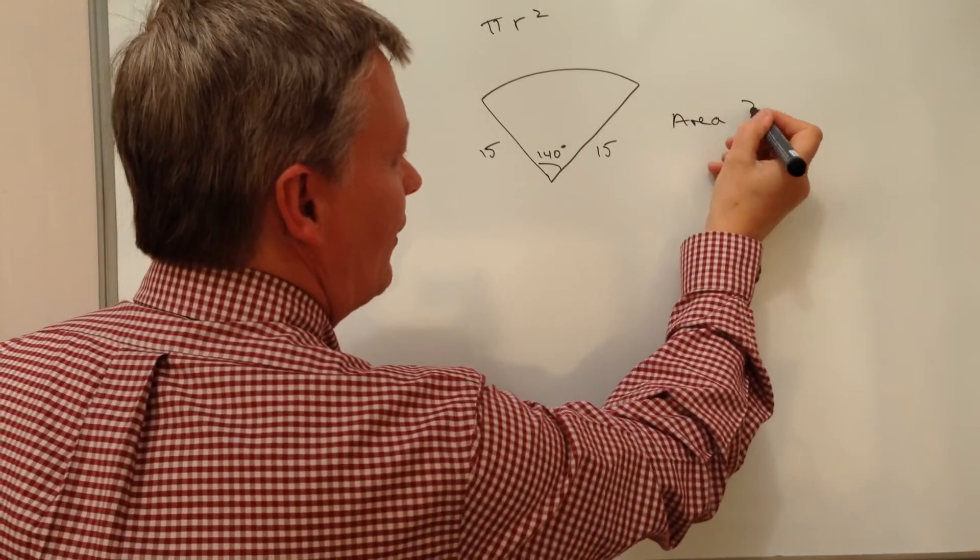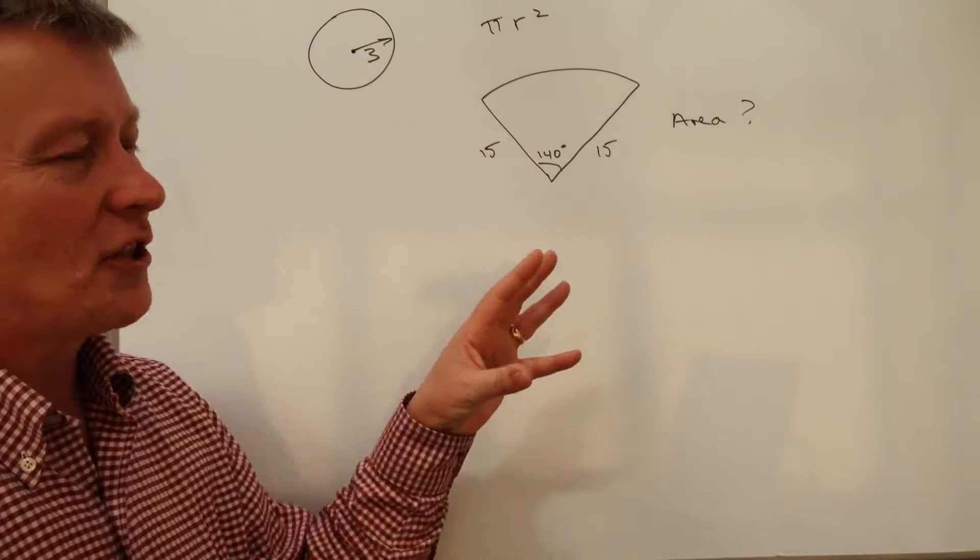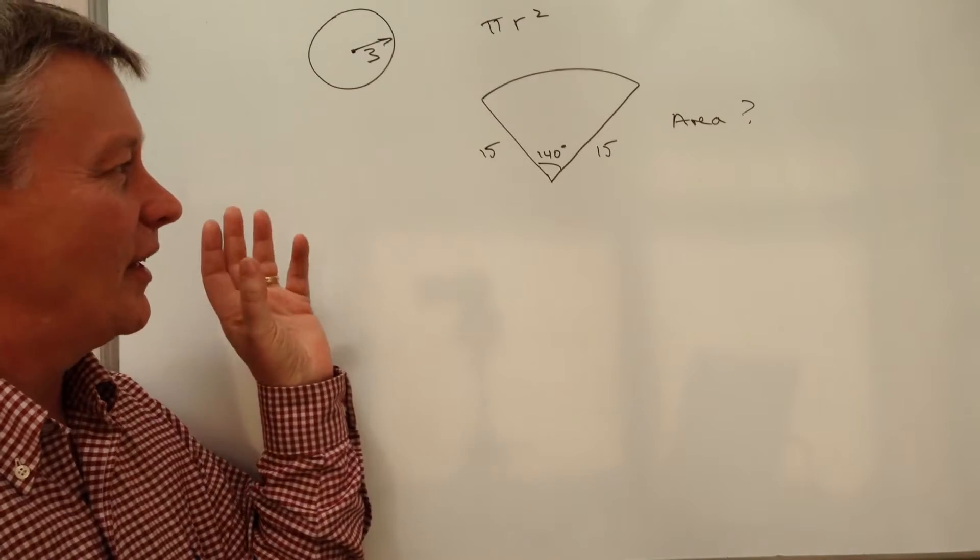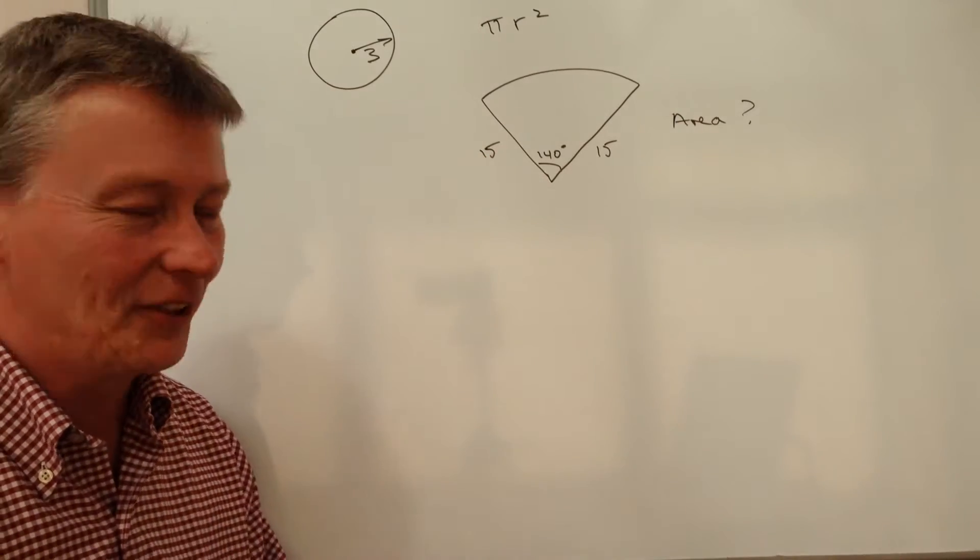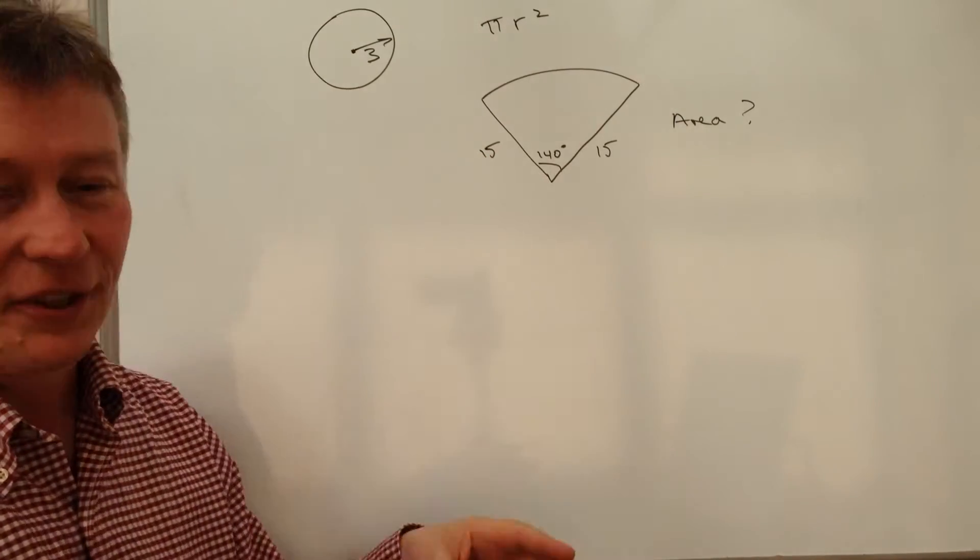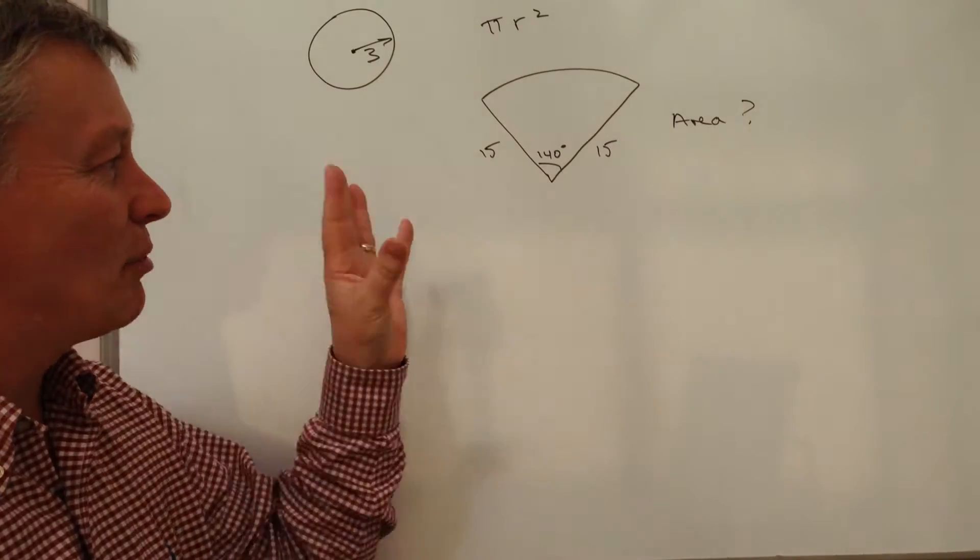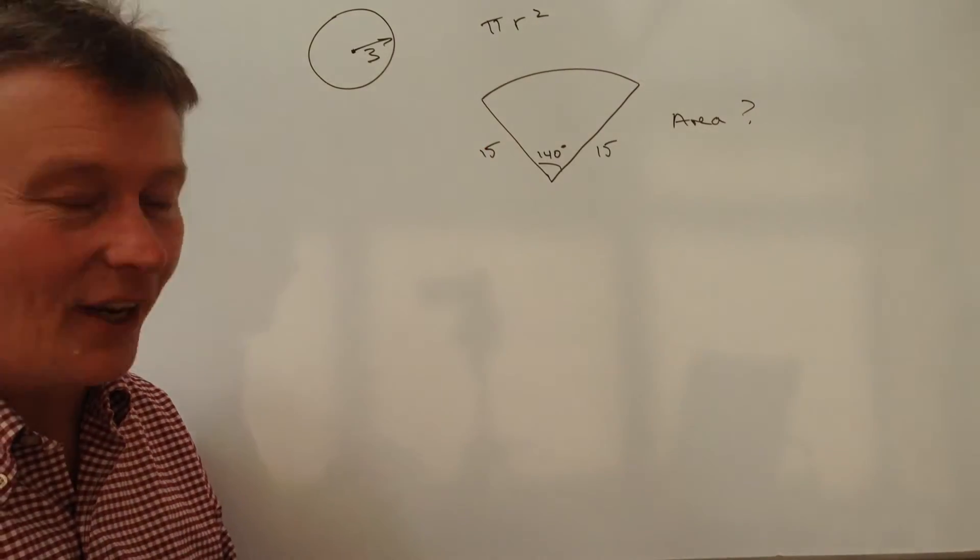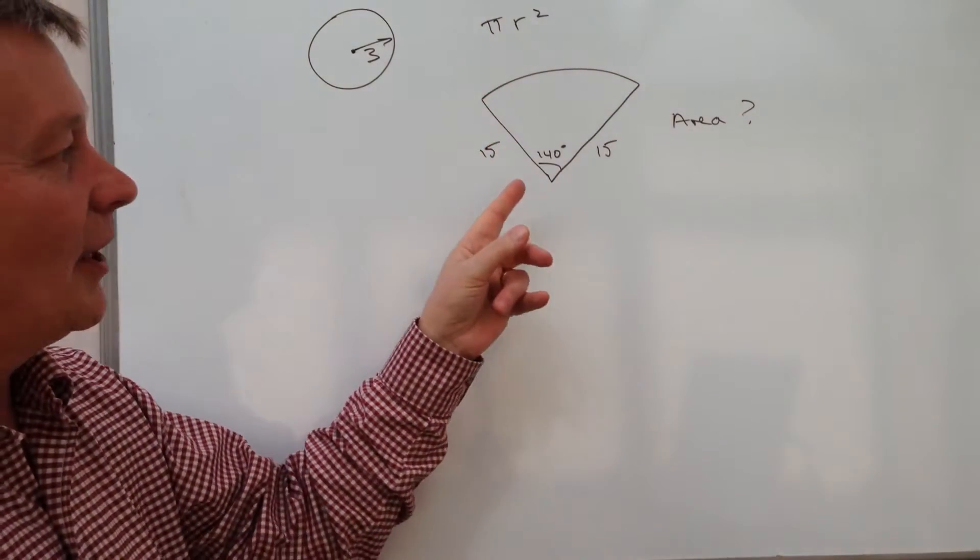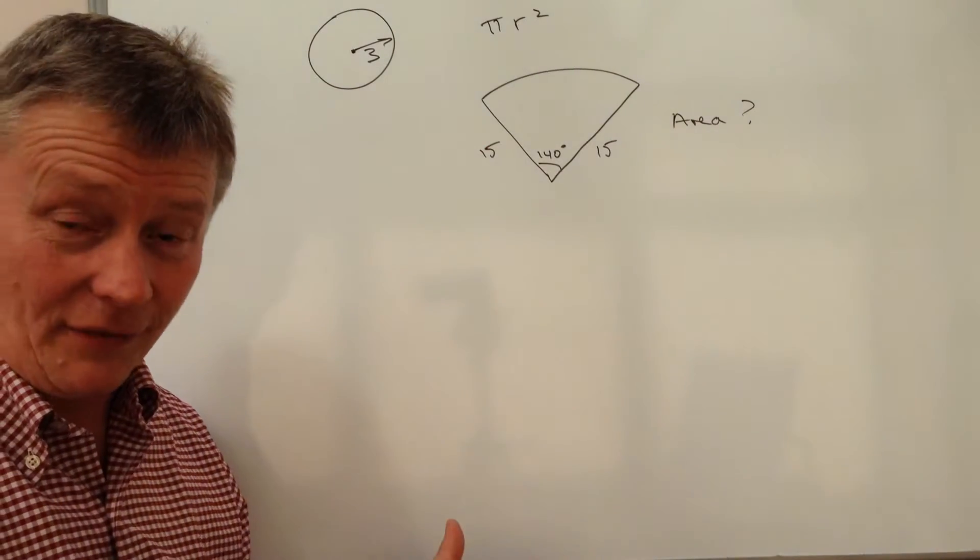More typically, they tend to dress this up a little bit. It might be some plot of land or it might be a piece on a jigsaw or something like that. But generally speaking, what we're looking to do is just take this formula and apply it to part of a circle.